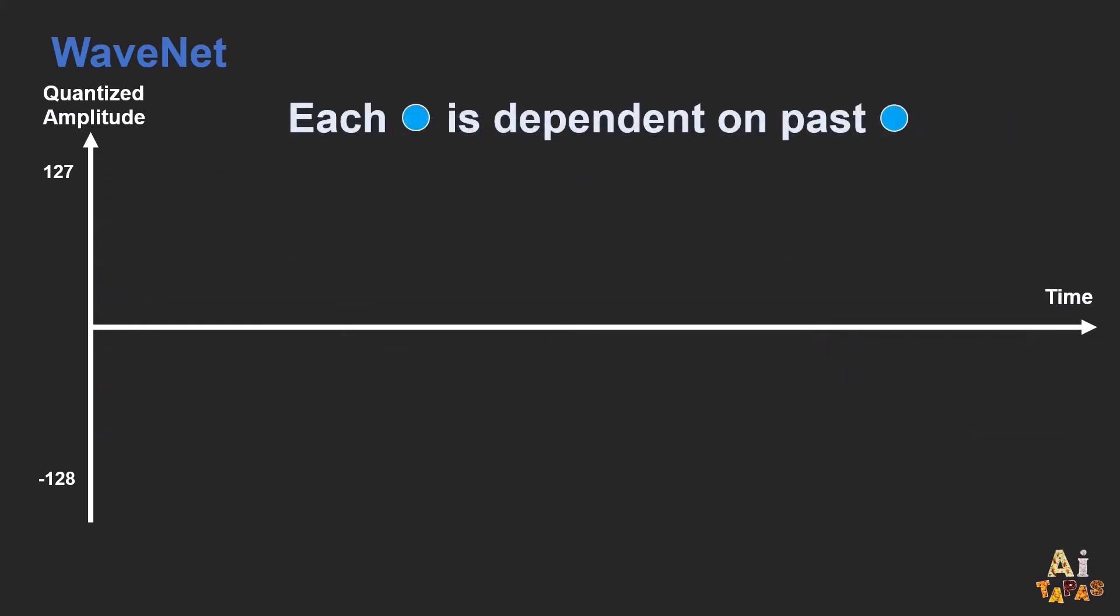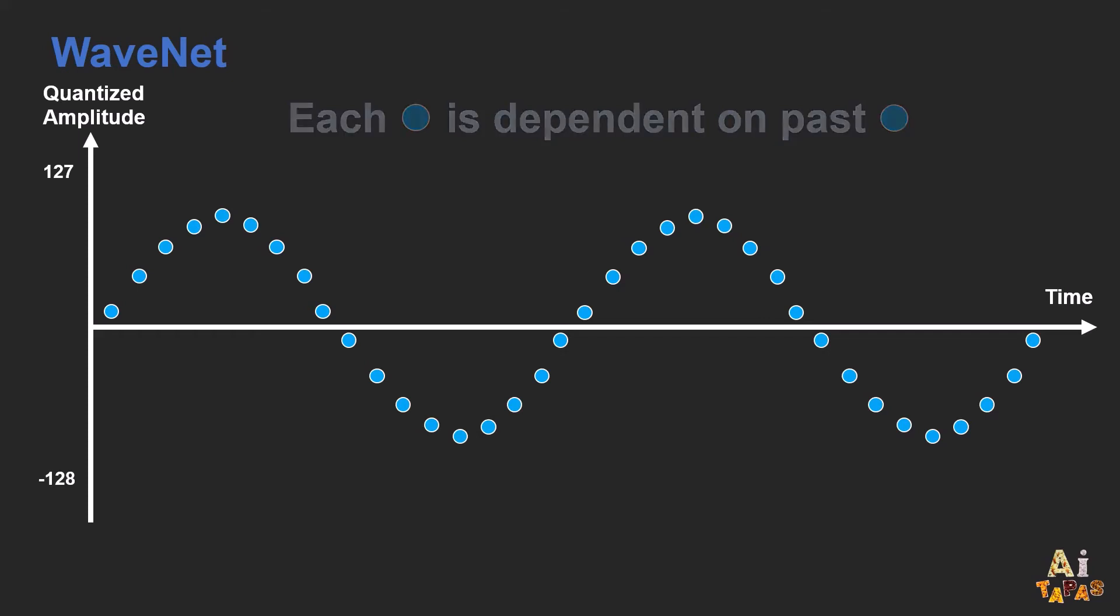The other thing that we observed is that the nature of sound waves as time series also means that each sample is dependent on past samples. So for example, if the model is to predict the value of this orange point, then it makes sense for the model to look back at past samples to estimate the prediction value. This issue is also complicated by the fact that each second of a speech recording typically consists of at least 16,000 sample points. This means that the model has to consider a large number of past samples to make a prediction.